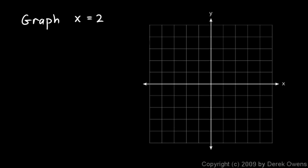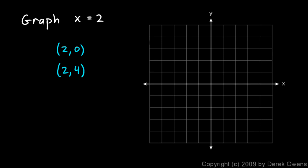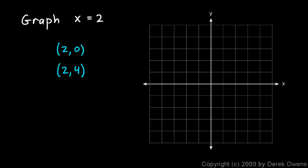Let's find a solution. Well, (2, 0) is a solution because x equals 2 right there, and that's what we're told — x equals 2. We aren't told that y has to be anything, so y could be any number. So (2, 0) is a solution, and so is (2, 4). The ordered pair (2, 4) is also a solution because x equals 2 and y could be anything — in this case it's 4. As long as x equals 2, it satisfies the equation.